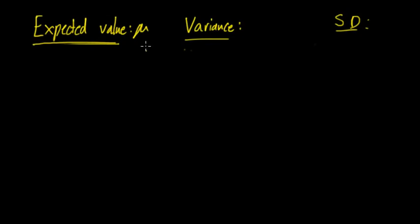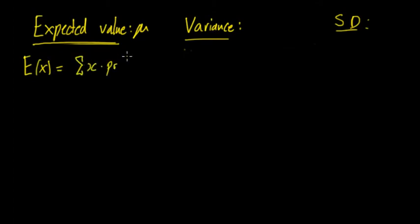We've previously looked at how to calculate these three, and you may have seen just general formulas, so I want to emphasize that you still can use these. For example, for the expected value you can use E(X) = Σ x · P(X=x). Basically what this says is that you're multiplying each outcome by its probability and then summing them all together.